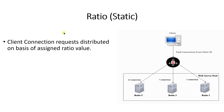Next comes ratio static. Client connection requests are distributed on the basis of what ratio value is assigned to each server device, and you as an admin can decide this ratio value. You can access the web GUI of the F5 appliance and define the ratio value on your own. The logic is very simple: higher ratio means a higher number of connections, lower ratio means a lower number of connections.